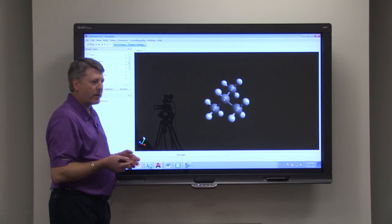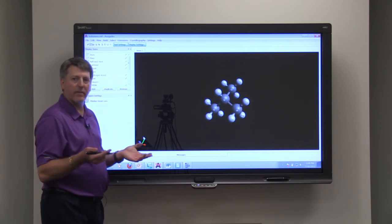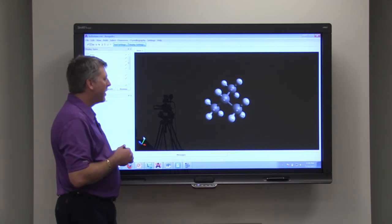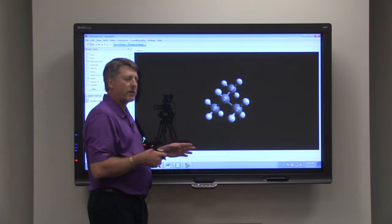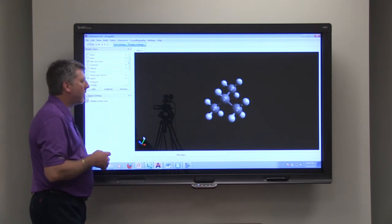For example, sucrose and fructose are isomers of one another. Sucrose is table sugar and everyone knows how sweet table sugar is. Fructose is an isomer of sucrose, but it tastes many times sweeter. And that's just due to the way the atoms are arranged.